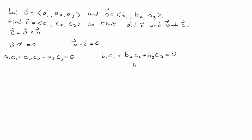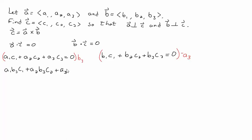Here's the tricky part that would take a little trial and error to figure out. What we're going to do is multiply the first equation by B3 and multiply the second equation by negative A3. So we get: A1·B3·C1 + A2·B3·C2 + A3·B3·C3 = 0. And: negative A3·B1·C1 − A3·B2·C2 − A3·B3·C3 = 0.